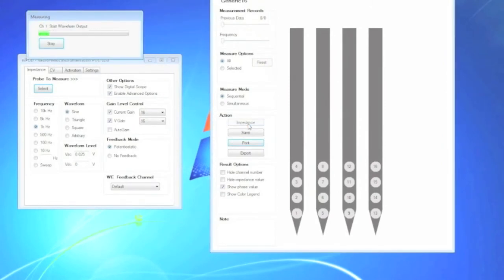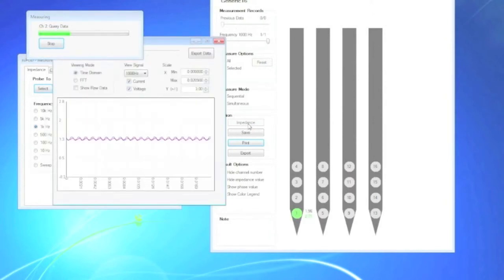As it runs, impedances and phases will be shown on the screen next to the site. The digital O-scope will show the relevant waveforms. Note that your measurements may look different.